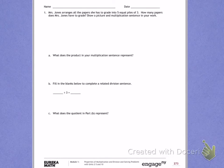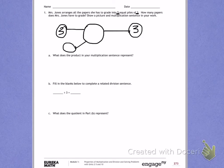Mrs. Jones has 5 piles of 3. To help me, I'm going to draw a number bond. In her first pile, she has 3 papers. In her second pile, she has 3 papers. In her third pile, she has 3 papers. In her fourth pile, she has 3 papers. In her fifth pile, she has 3 papers.